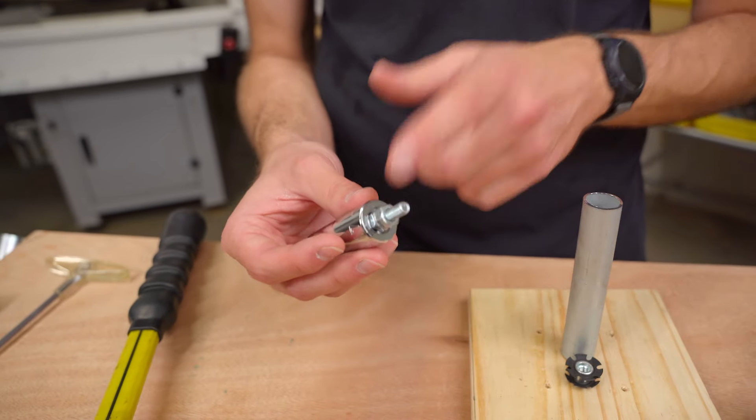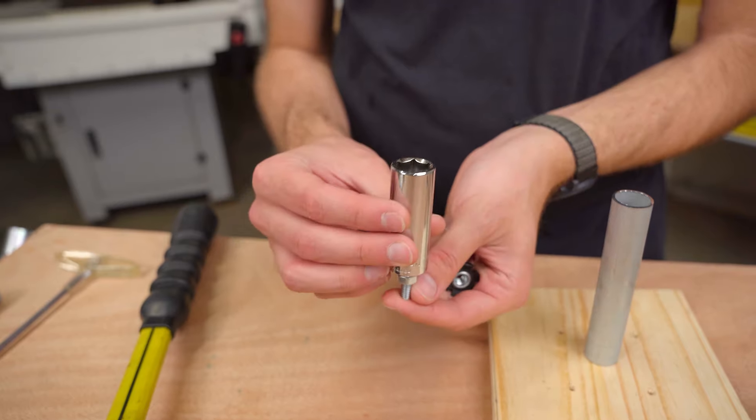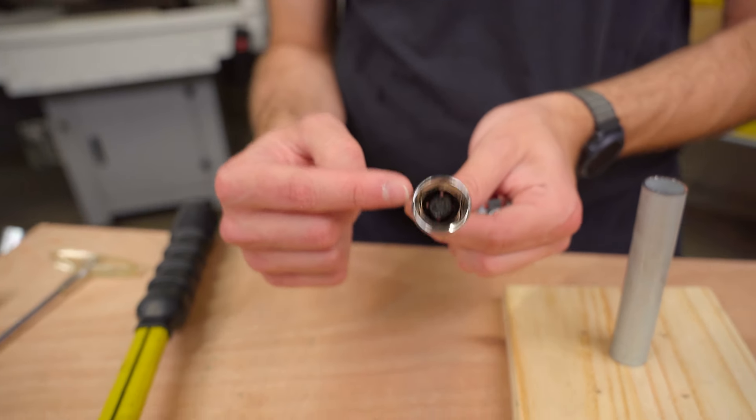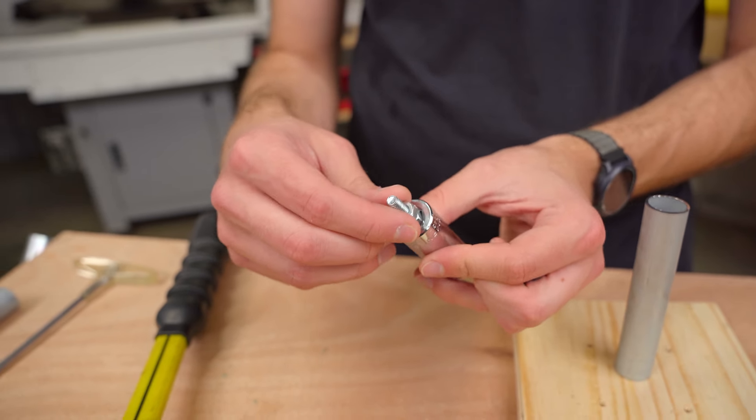And speaking of hardware, you could use a 1/4-20 or 3/8-16 depending on the insert that you're using. It's just a normal bolt with the head of the bolt inside of the socket on this side, and then it comes out. And then you just thread on a couple of nuts.